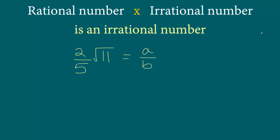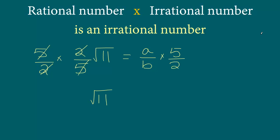We are going to isolate square root 11 all by itself on the left hand side. We multiply both sides by 5 in the numerator and 2 in the denominator, so that the 2/5 cancels out and we are left with only square root 11. That means we multiply the right hand side numerator by 5 and denominator by 2. So on the left hand side we are left with square root 11, and on the right hand side we have 5a divided by 2b.